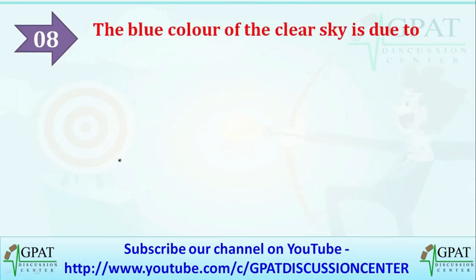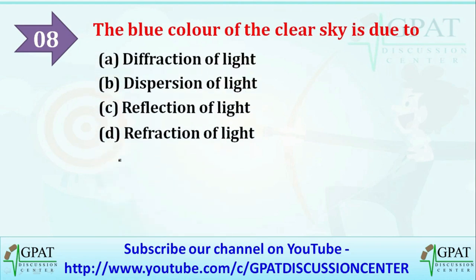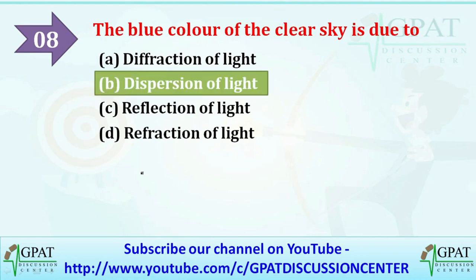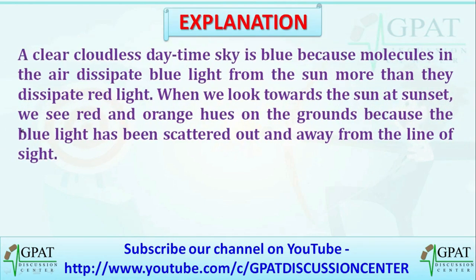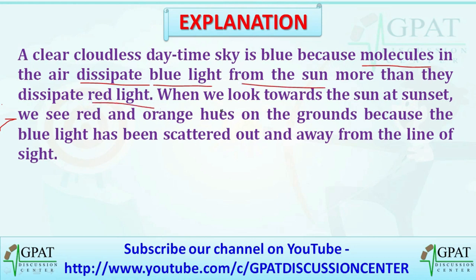The next question: the blue color of clear skies is due to — options are deflection of light, dispersion of light, or reflection of light. The correct answer is dispersion of light. A clear, cloudless daytime sky is blue because molecules in the air disperse blue light from the sun more than they disperse red light. When we look toward the sun at sunset, we see red and orange hues because the blue light has been scattered out and away from the line of sight.